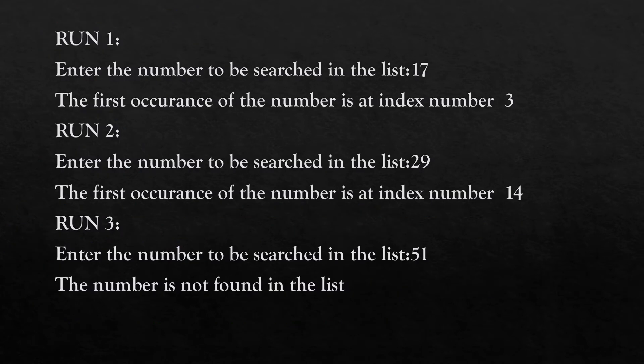Now we are on the program. In the first run we have entered the number to be searched as 17 and it gives that the first occurrence of the number is at index number 3 as per the list defined in the program. In the second run I'm searching for number 29 and it shows the first occurrence is at index number 14. In the third run I am searching for number 51 which is not present in the list, so it shows the number is not found.